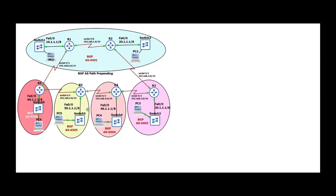Hello friend, welcome to tonight's course. My name is Adresi Francis. In this video we are going to see how to configure BGP AS path prepending. As we already know, the AS path is the fourth BGP attribute and it's a well-known mandatory attribute. The path with the shortest AS path list is more preferable, meaning if Router 1 wants to reach the 30.network, it will use the serial 4/1 exit path because it has fewer autonomous systems.